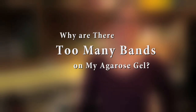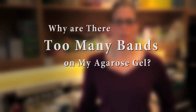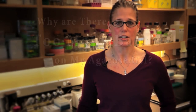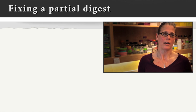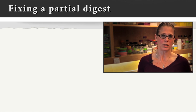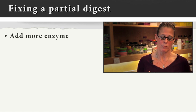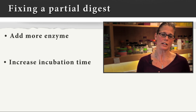If you're seeing too many bands in your gel after restriction digestion, it's most likely due to either star activity or a partial digestion. Partial digestion is an incomplete digest, and you can drive the reaction to completion by either adding more enzyme or increasing your incubation time.